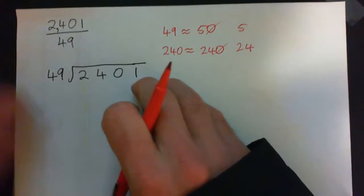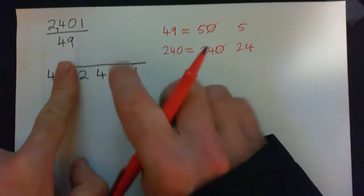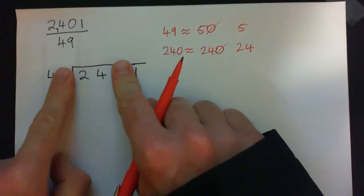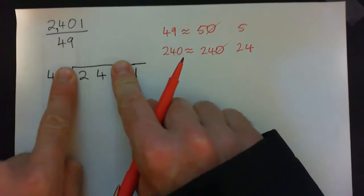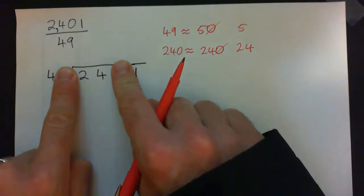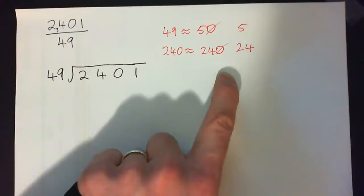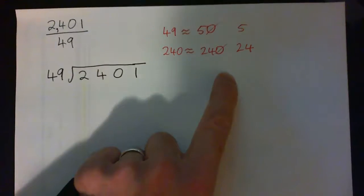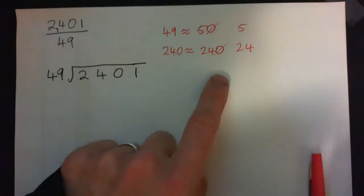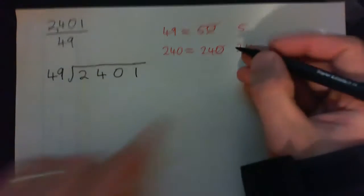And 50 into 240 is just like 5 into 24. So let's think 5 into 24. Now if we did this trick where we just cover over the digits here, we'd be a little off because 4 into 24 would be 6 times and that's going to be way off. But it's more like 5 into 24. So 5 into 24 goes about 4 times.